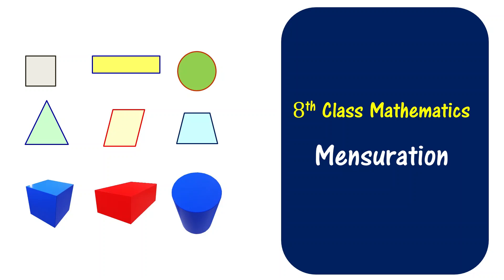This is part 2 video on mensuration topic. In part 1, we covered square, rectangle, and circle. In this video, we are going to discuss about triangle, a general quadrilateral, and a rhombus — how do you get the area and perimeter of these shapes?